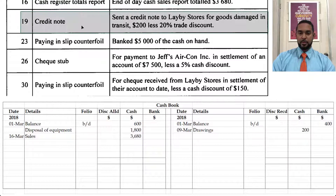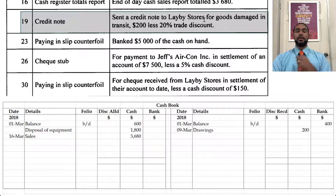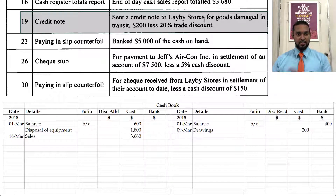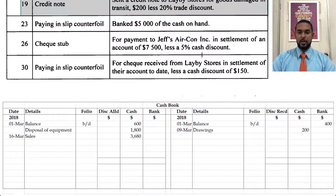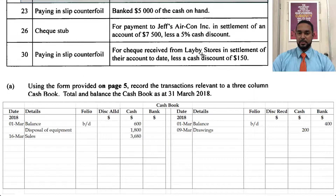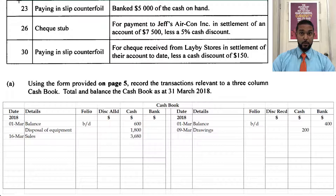There's a credit note sent to Lay By Stores for goods damaged in transit — $200 less 20% trade discount. If we send a credit note, that's a returns inward — we are crediting their account. Again, this is a returns transaction, not a cash transaction, so it's not going to affect the cash book.